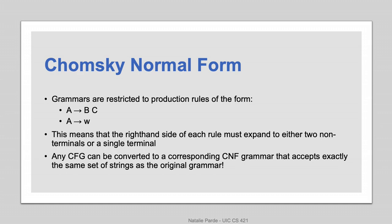Chomsky Normal Form restricts production rules so that they can only produce either two non-terminals or one terminal node. Fortunately, any CFG that isn't already in Chomsky Normal Form can easily be converted to that format without any changes to the set of strings that the grammar accepts.